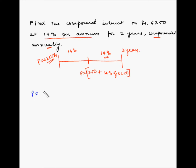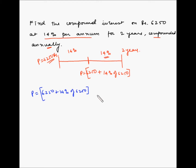At the end of the first year, the principal equals 6250 plus 14% of 6250. This amount goes into the second year as the principal, on which again you get 14%. So the amount at the end of 2 years equals the principal plus 14% of the principal.